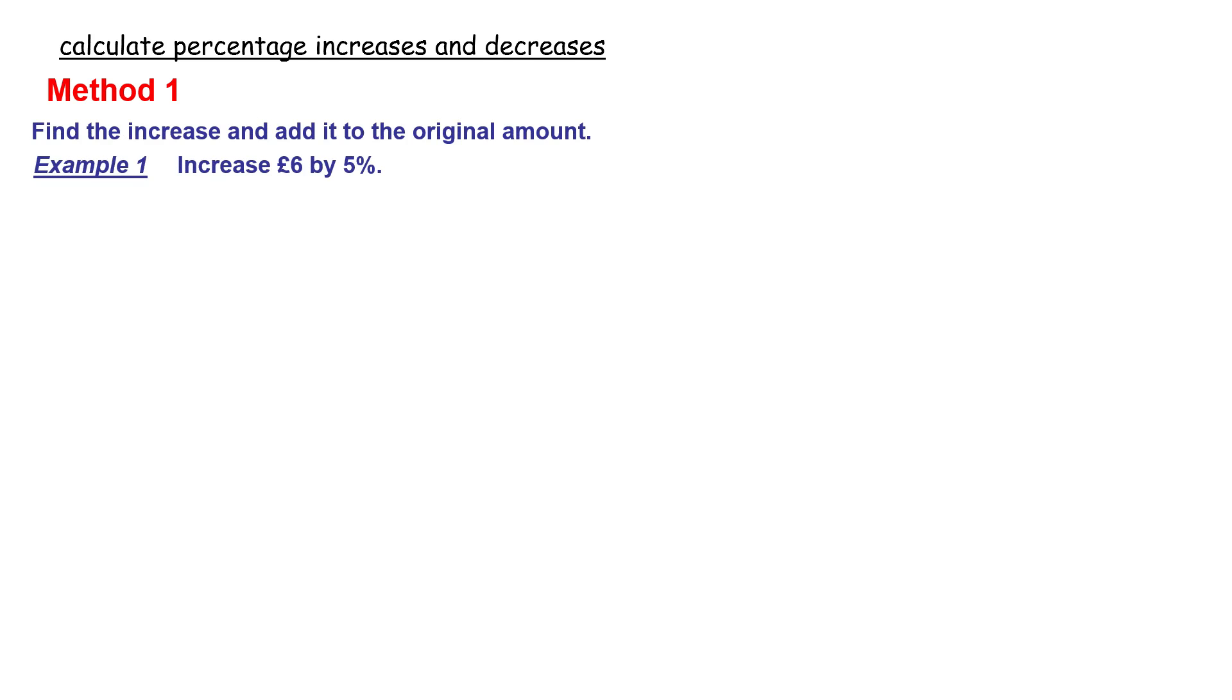Let's look at method one with an increase. So it says increase six pounds by five percent. So we first find five percent of six pounds. Percent means out of 100, so five out of 100 times six. You can work that out on the calculator. In a calculator you do 5 divided by 100 and then you multiply by 6. And that's going to give us 30 pence.